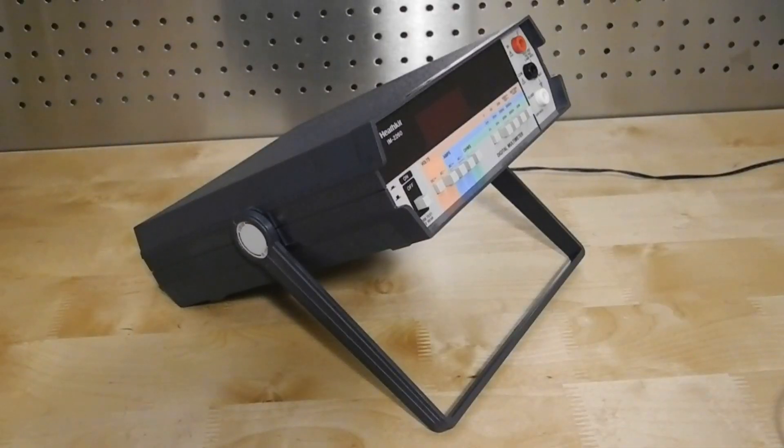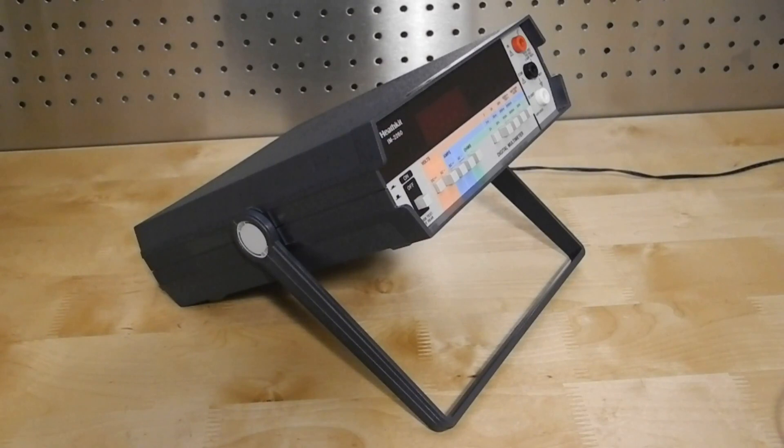The plastic case was the same as used on some other Heathkit instruments, such as frequency counters. It features a rotatable handle that also functions as a stand and can be locked in position.